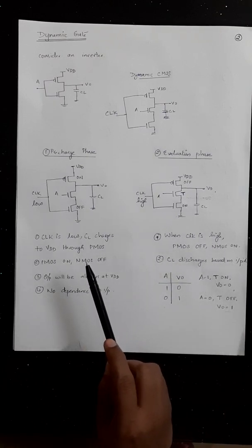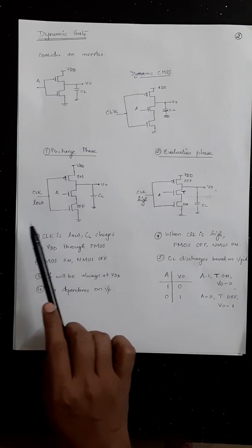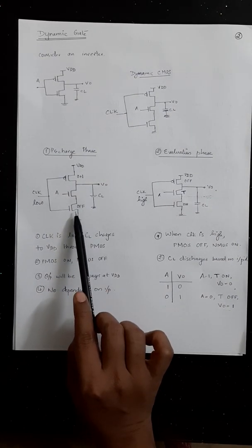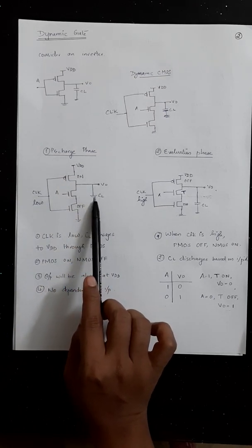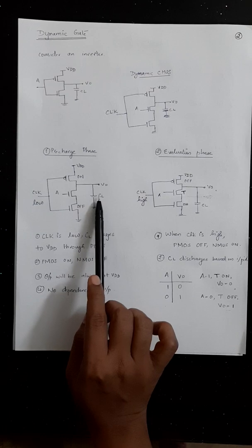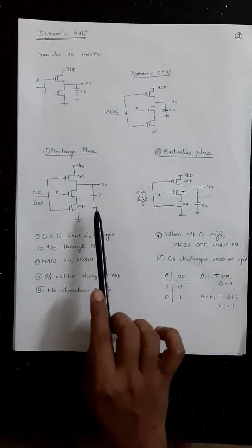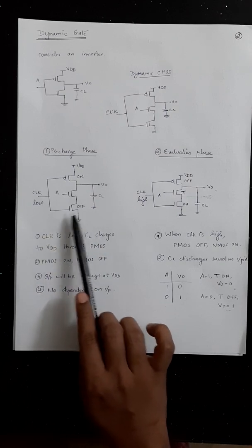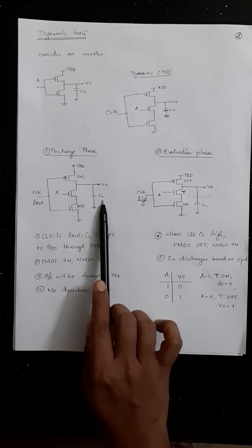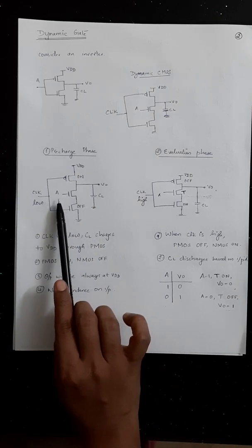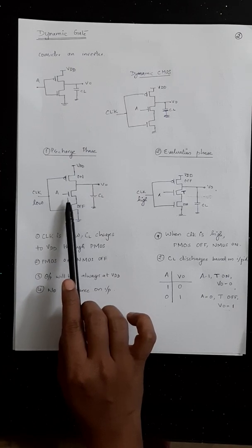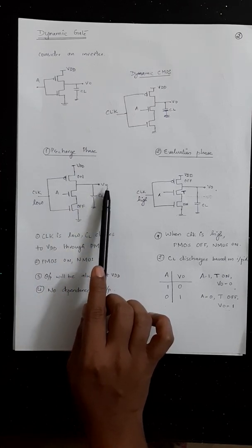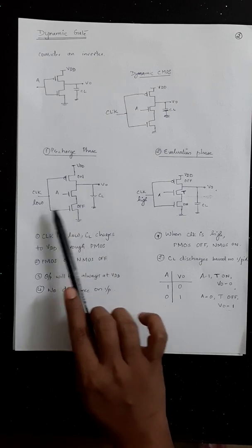In the pre-charge phase, the clock is low. When clock is low, PMOS is on and NMOS is off, so capacitor CL charges from Vdd up to a maximum of Vdd. Since NMOS is off, the output will always remain at Vdd, regardless of the input — output is always high when clock is low.